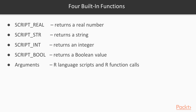The four built-in functions are: SCRIPT_REAL, which returns a real number; SCRIPT_STR, which returns a string; SCRIPT_INTEGER, which returns an integer; and SCRIPT_BOOLEAN, which returns a boolean value. The arguments to these functions include R language scripts and R function calls.